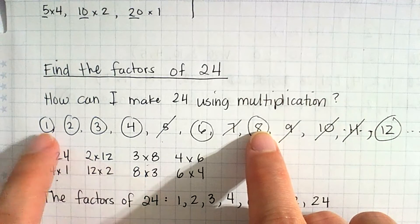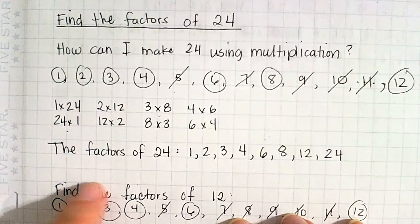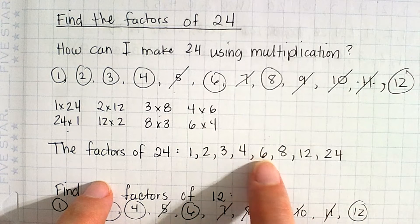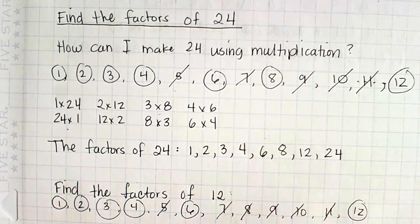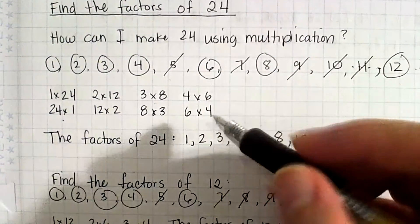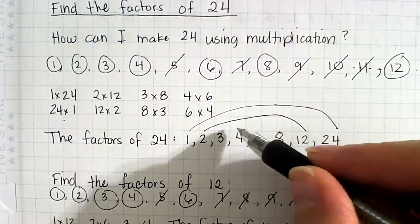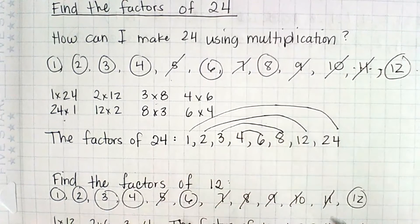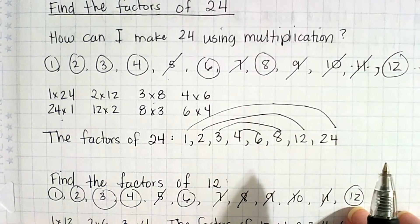8 I already used, so the factors of 24 are 1, 2, 3, 4, 6, 8, 12, and 24. To show the rainbow pattern: 1 and 24, 2 and 12, 3 and 8, and then 4 and 6 — the numbers connect from the outside in.